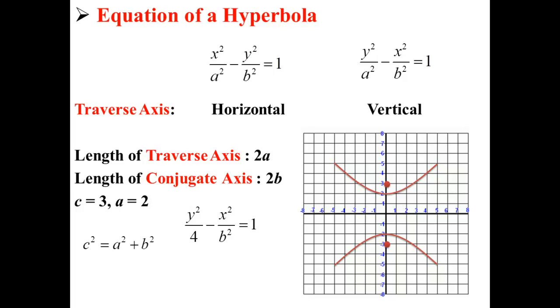For this situation, we can actually use the Pythagorean theorem to find b squared. We already know that c squared is equal to 9 and that a squared is equal to 4, so we can solve for b squared. In this case, b squared is equal to 5. So now we plug that into our equation.